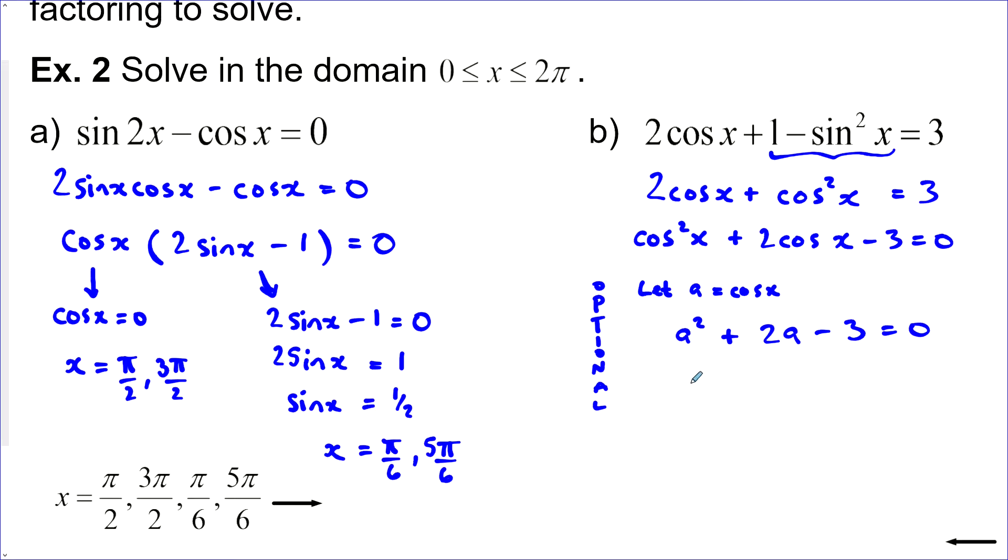I can see, hey, I can really factor that easily. So I've got a plus 3 and a minus 1 equals 0. That means a equals negative 3 and 1. And then here's the end of the optional part here. I sub back out the a that I put in there.